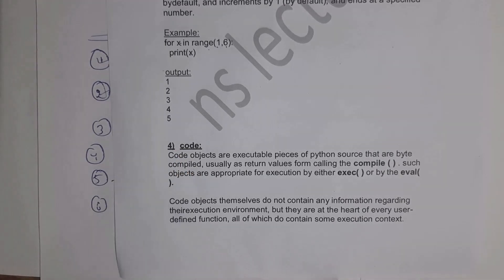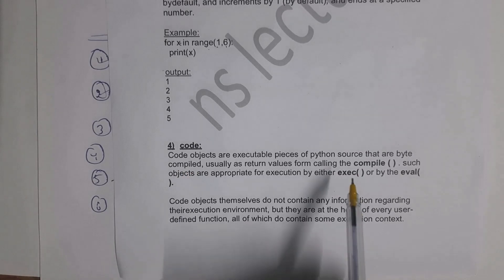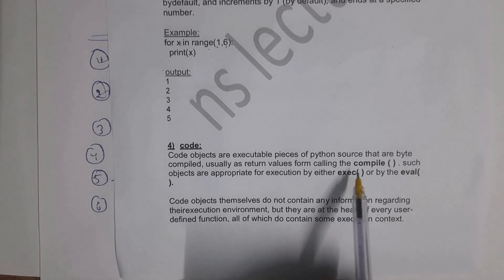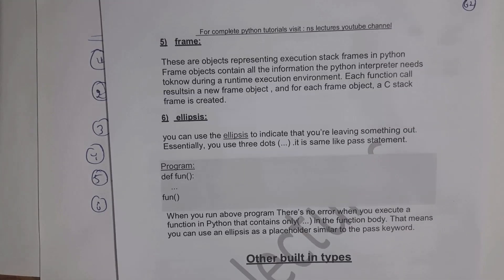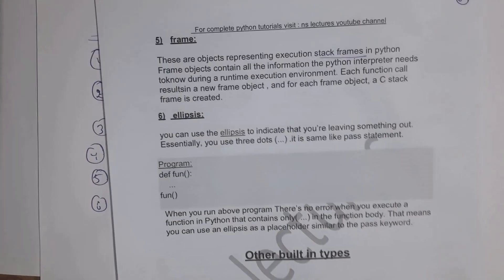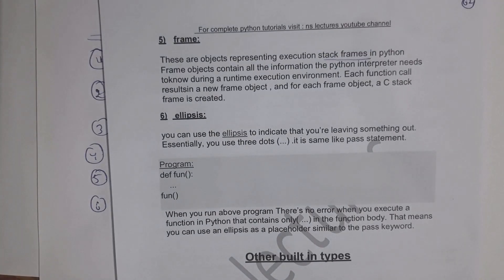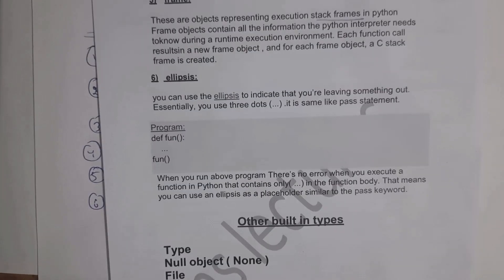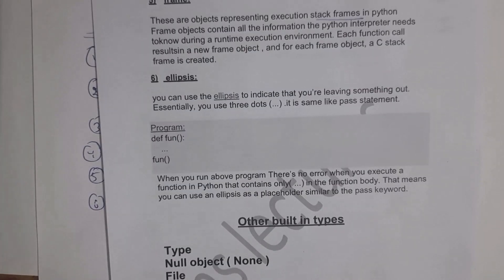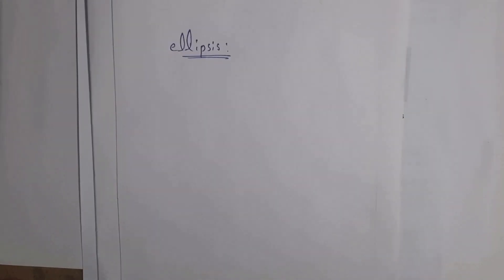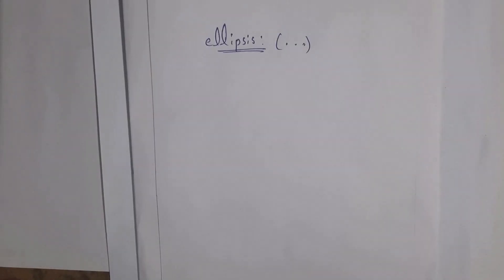Code objects are executable pieces of code that are byte-compiled. We execute them using either the exec function or the eval function. Frame objects are used to represent stack frames in Python, and they contain information about the Python interpreter.